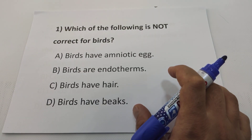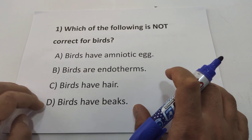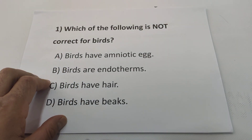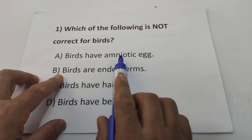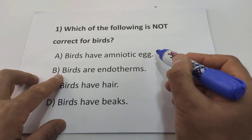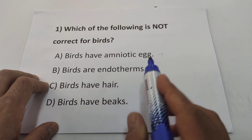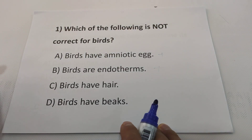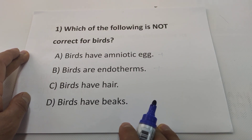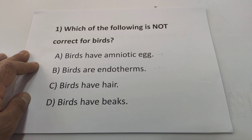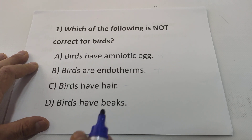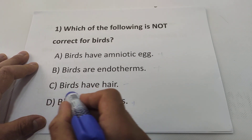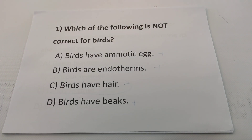Hi students, our topic is about birds and mammals. We are going to solve some questions. Question one: which of the following is not correct for birds? Birds have amniotic eggs — that is true. Birds are endotherms — that is true. Birds have hair — no, birds have feathers. Birds have beaks — that is true. So the answer will be C.